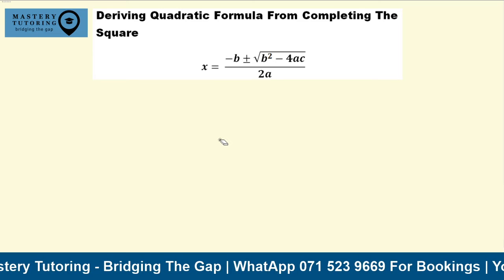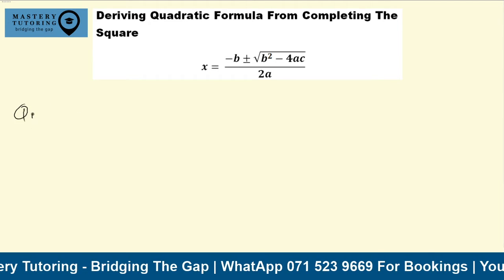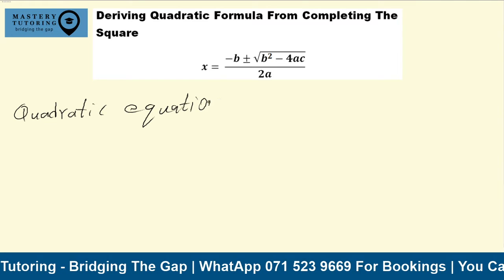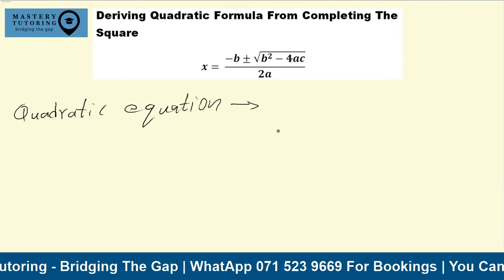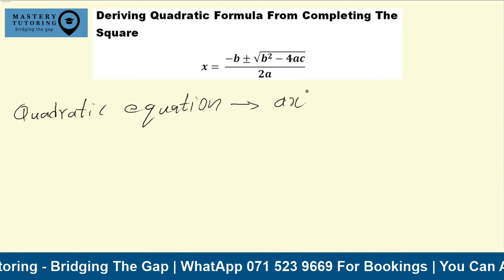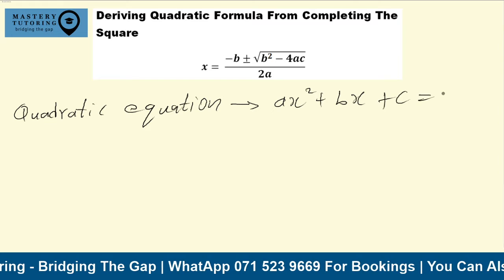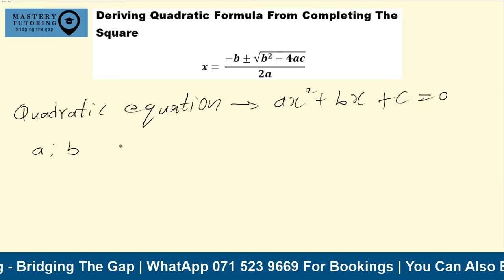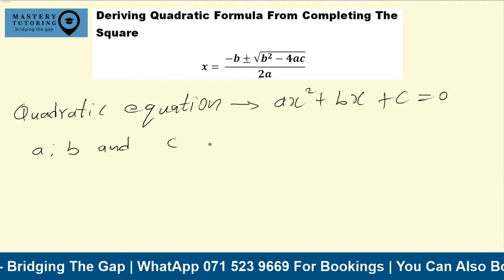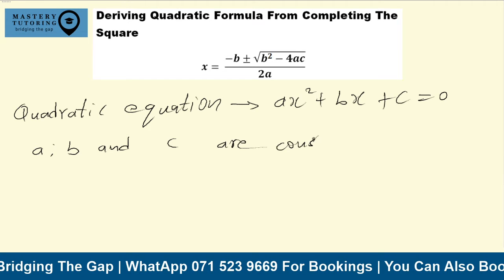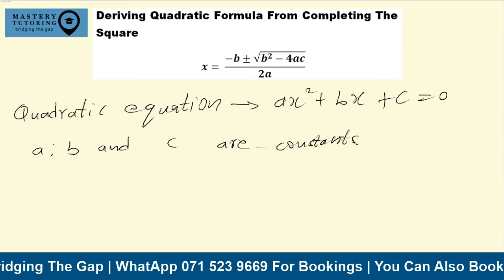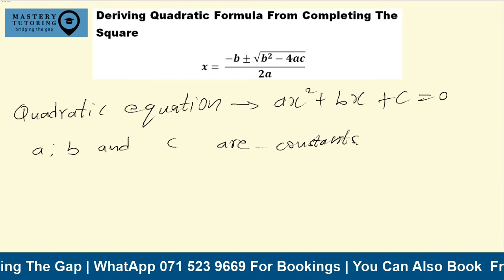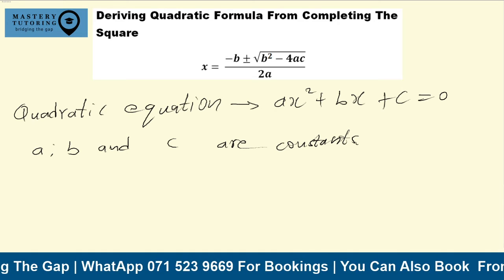The quadratic formula is derived from what we call a quadratic equation. The quadratic equation is given by: suppose we have ax² + bx + c = 0. Remember that a, b, and c are constants, while x — or x² — is a variable. This is what we call a quadratic equation.